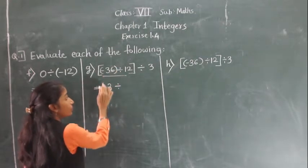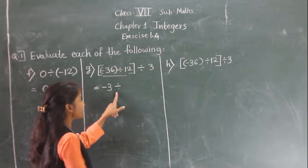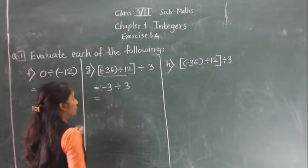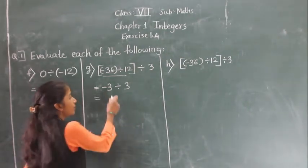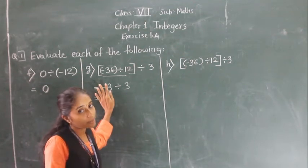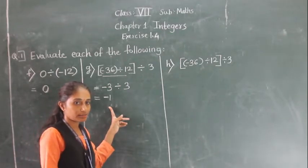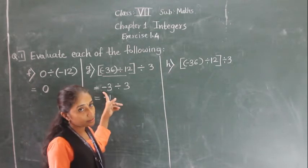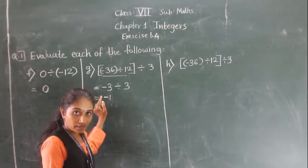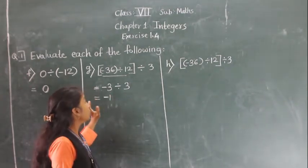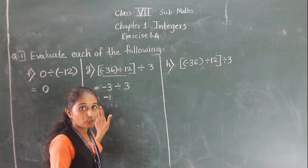Now we have minus 3 divided by 3. We divide as whole numbers — 3 ones are 3 — and put a minus sign before the answer. When dividing a negative integer by a positive integer, we divide as whole numbers and then put a minus sign before the answer. The final answer is minus 1.